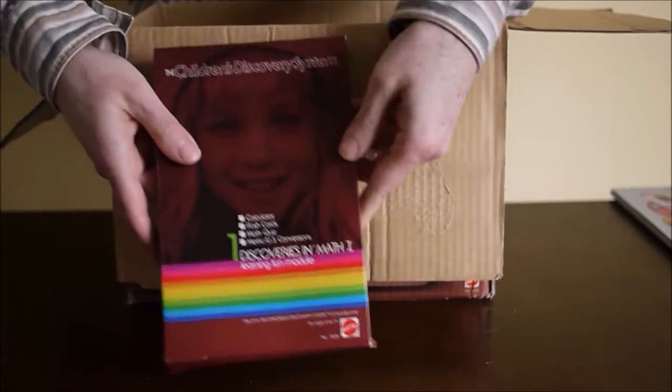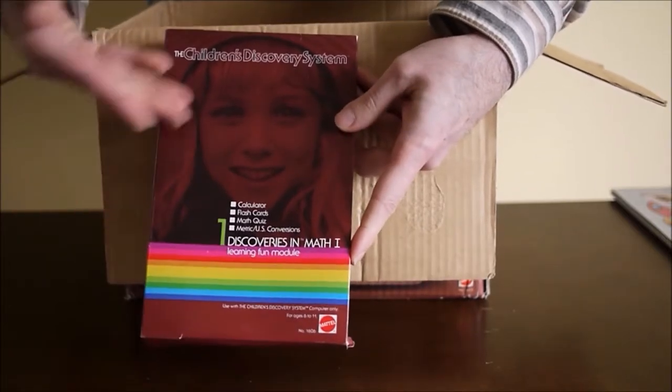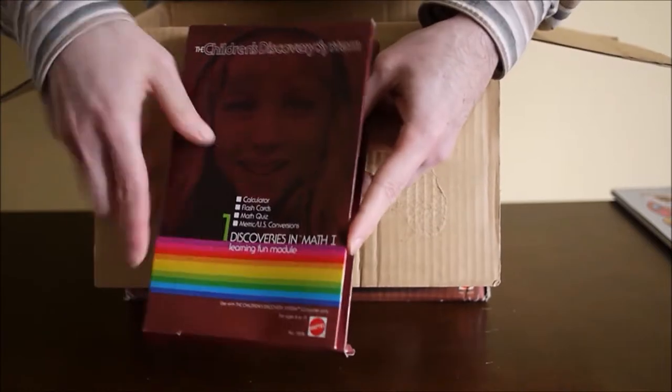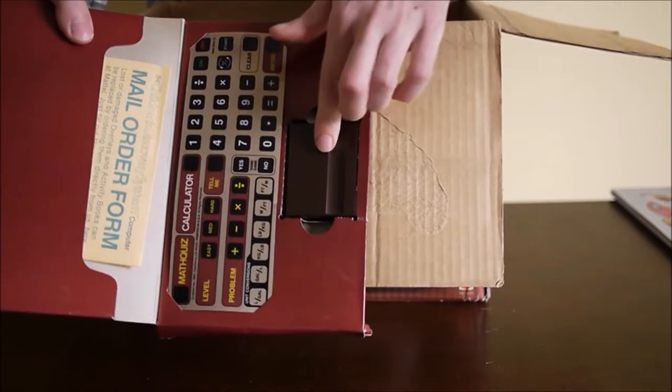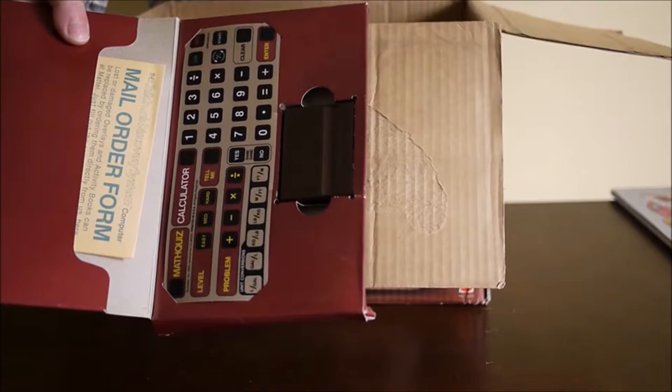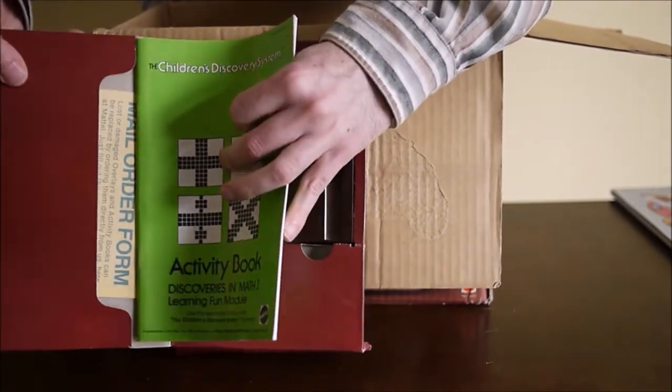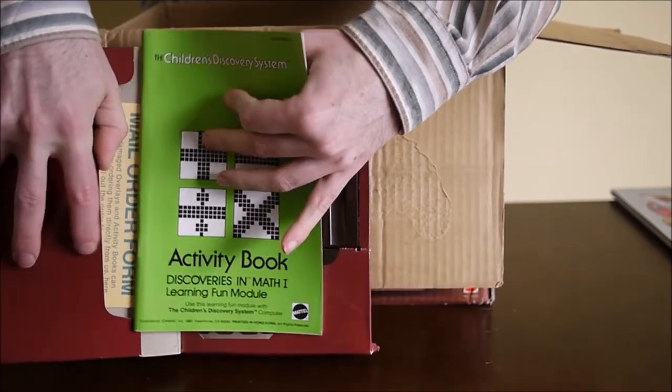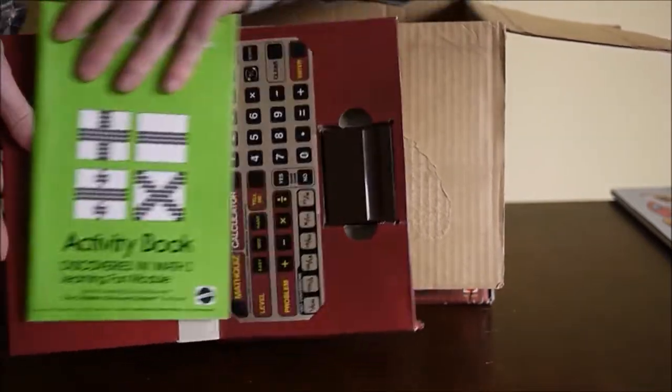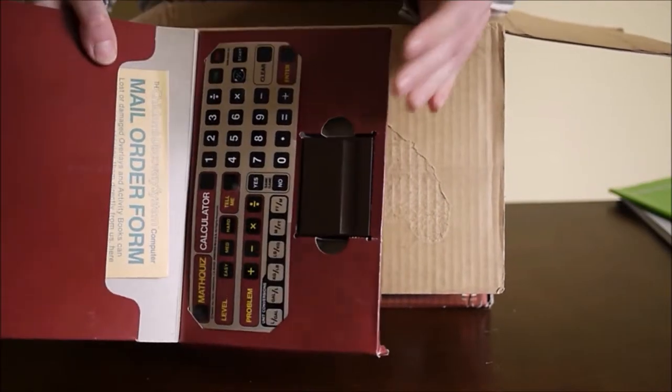This is the included module, the math module. They didn't go with artwork on the boxes. Instead you get a big kid's face, different kid on each box, and the cartridge overlay. It does come with an activity book. I didn't want to jam it in there, but it does kind of fit. These boxes have been flattened out for about 30 years, so they haven't retaken their complete shape.